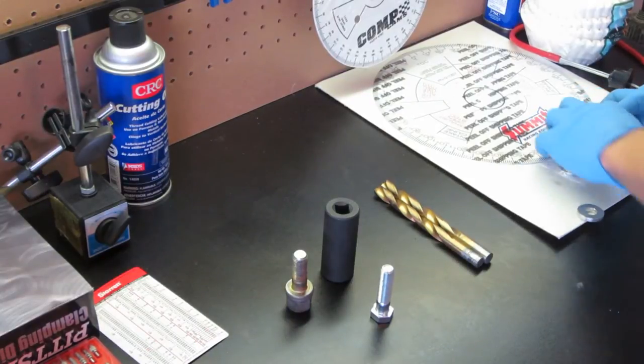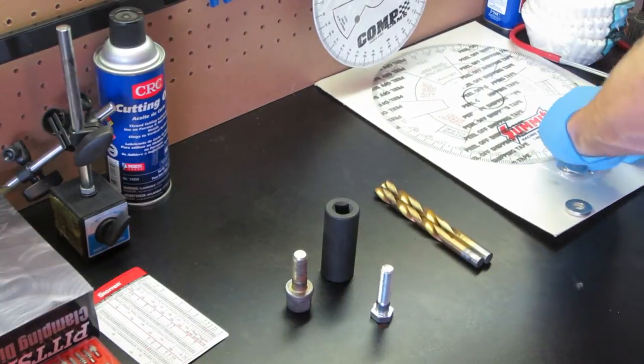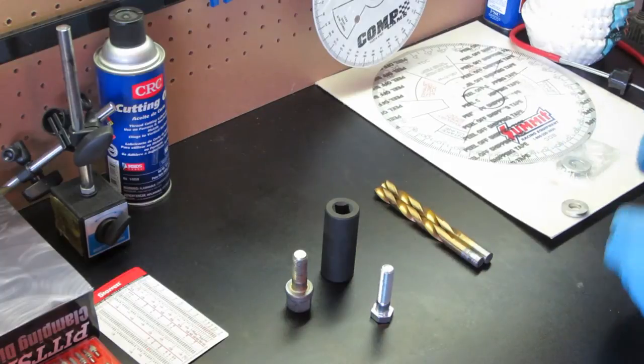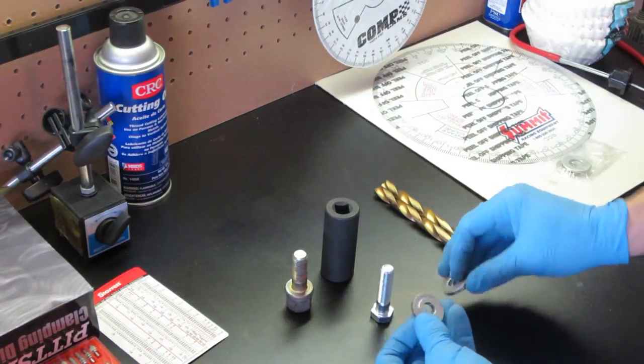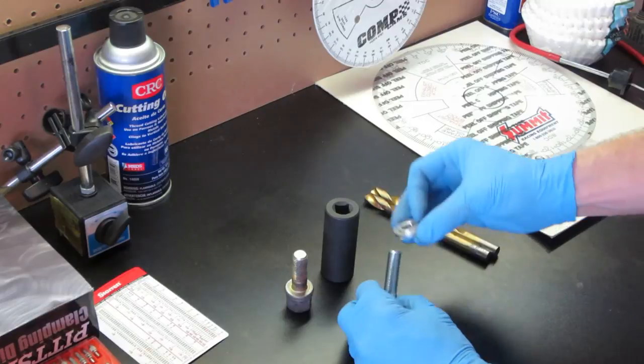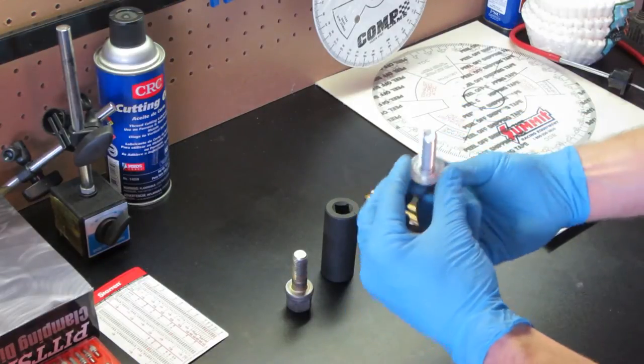Before you go cutting threads, you need to ensure one of the collets included with your degree wheel can properly center the wheel to the tool. In this case, the Summit wheel comes with a half inch collet that fits snugly around the smooth shouldered portion of this bolt.